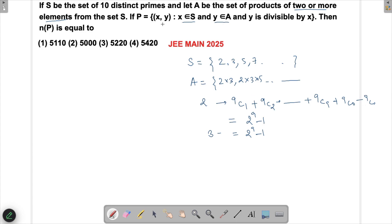If I choose x, and all these are prime numbers, and y has to be divisible by x. For example, if I choose 2, then y will have the value of 2^9 - 1 possibilities. Similarly, if I choose another number 3, then again y will be having all the possibilities 2^9 - 1.